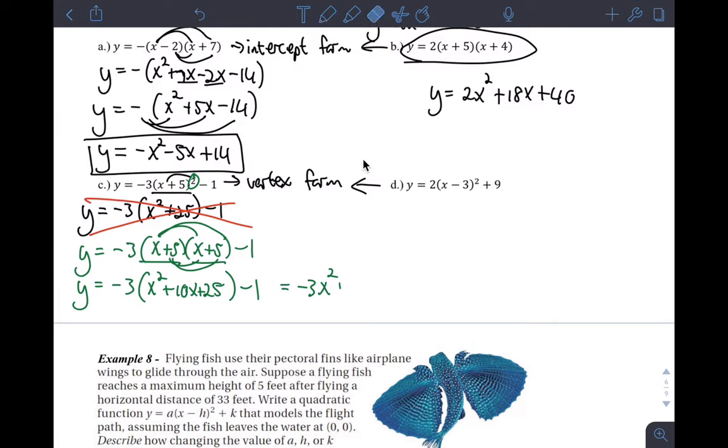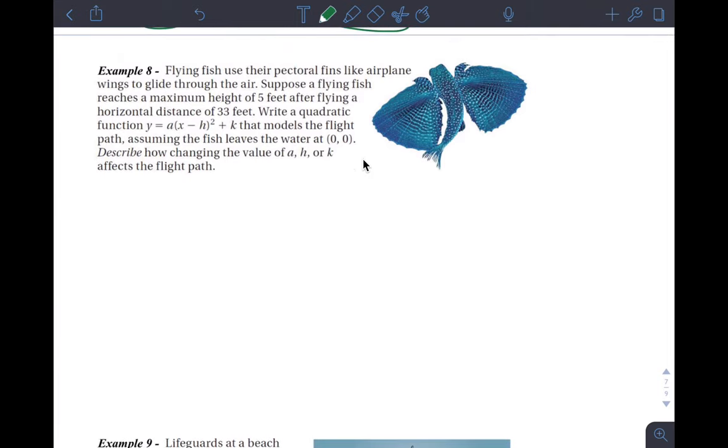I'm going to do this a bit quicker too because I think you are definitely capable of handling that. Negative 3 times x² is negative 3x², negative 3 times 10x is negative 30x, negative 3 times 25 is negative 75, minus another one is negative 76. So the solution to this one, changing from one form to another, is that. And this one, if you do this one on your own, which I think you're capable of, you get y equals 2x² minus 12x plus 27. And I will do these other two examples for you in another video.